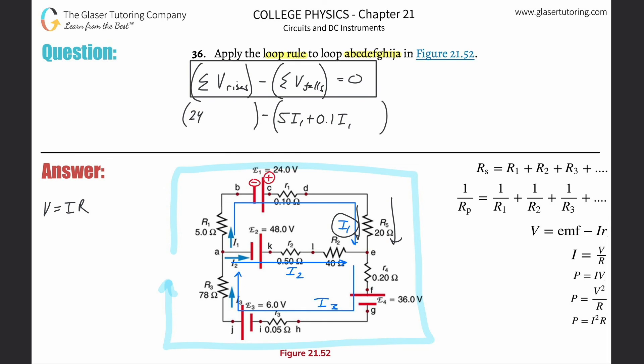Now we keep traveling. We get to another resistance. We're traveling down with the current, so it's a potential fall - that's 20 times I1. We keep going, and notice we're still traveling in the direction of the current here. This potential represents a potential fall across that resistor, and it's a new current - that's I3. So plus 0.2 times I3.